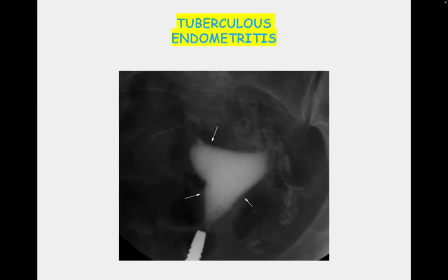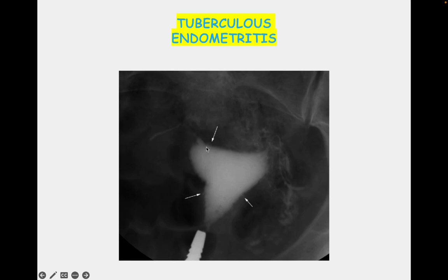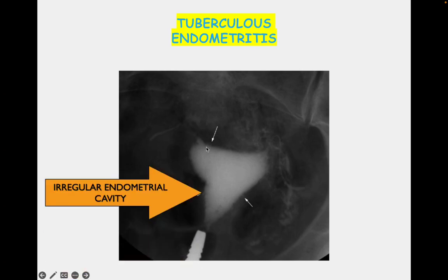Now we discuss the fallopian tube images and move to endometritis. The endometrium also gets involved, as already mentioned, in 50 to 80% of cases. The endometrium can be involved in tuberculosis, although the fallopian tube is the most common site. Here you can see the irregular endometrial cavity, which is suggestive of endometritis.